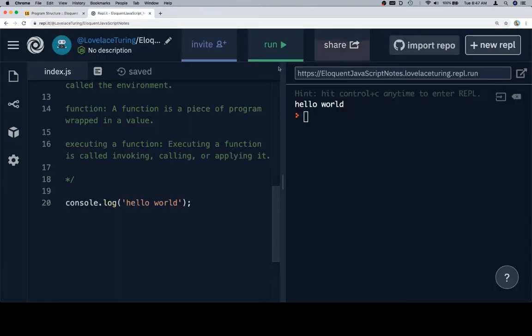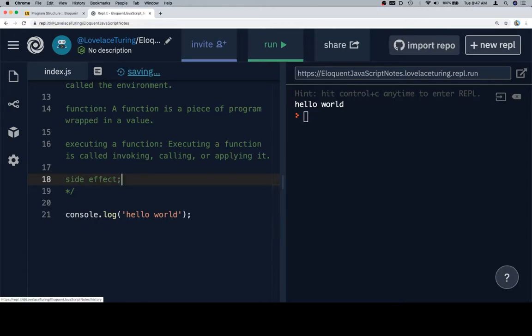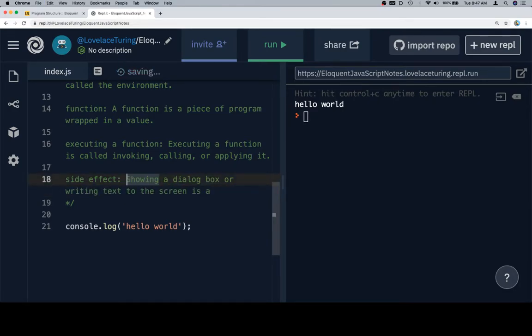So we'll copy that and bring it over to our vocab list. Side effect. We'll say showing a dialog - EG, which I think means exempli gratis, like Latin for 'here's an example' - showing a dialog box or writing text to the screen. That works.